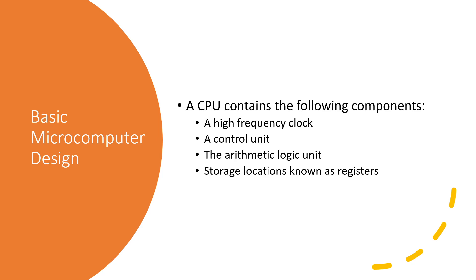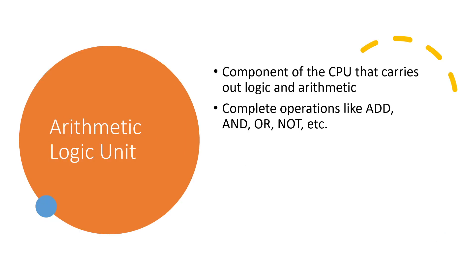Focusing in on the CPU, it has the following components: a high-frequency clock, a control unit, arithmetic logic units, and storage locations known as registers. The arithmetic logic unit is the part of the CPU that carries out logic and arithmetic — operations like add, subtract, AND, OR, and NOT. It's essentially a special part of the CPU that does all the calculations needed.